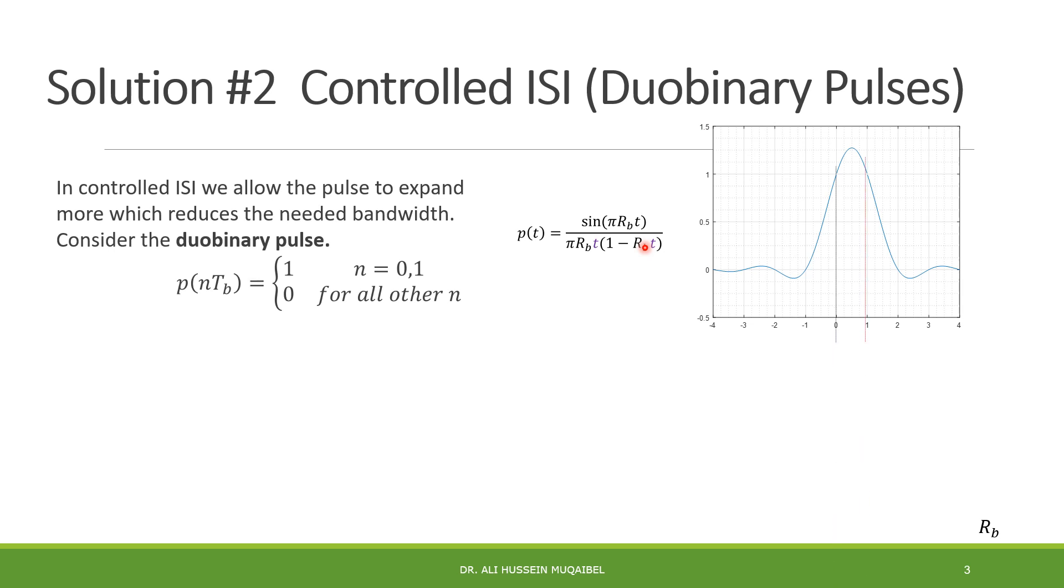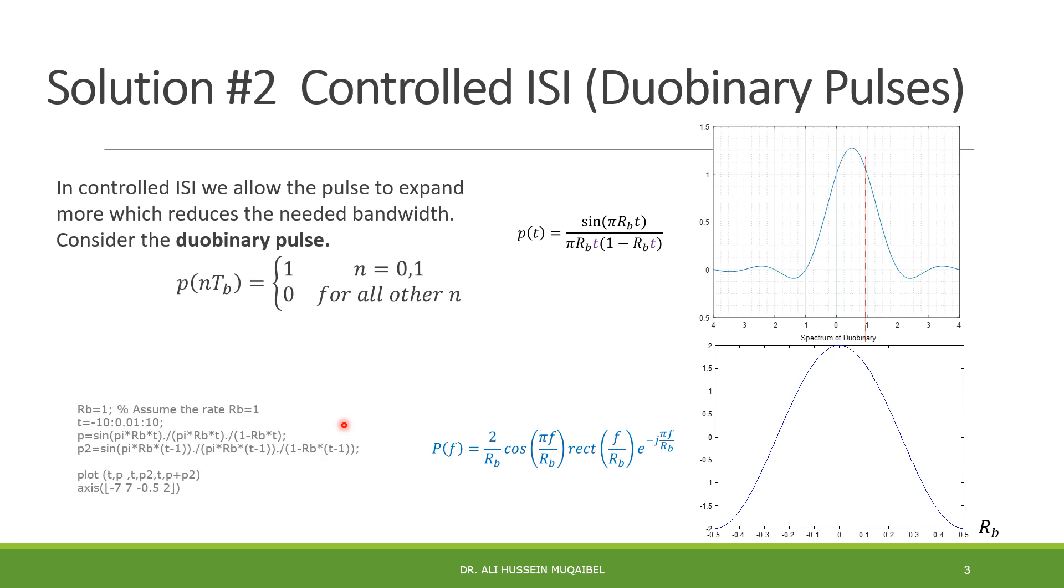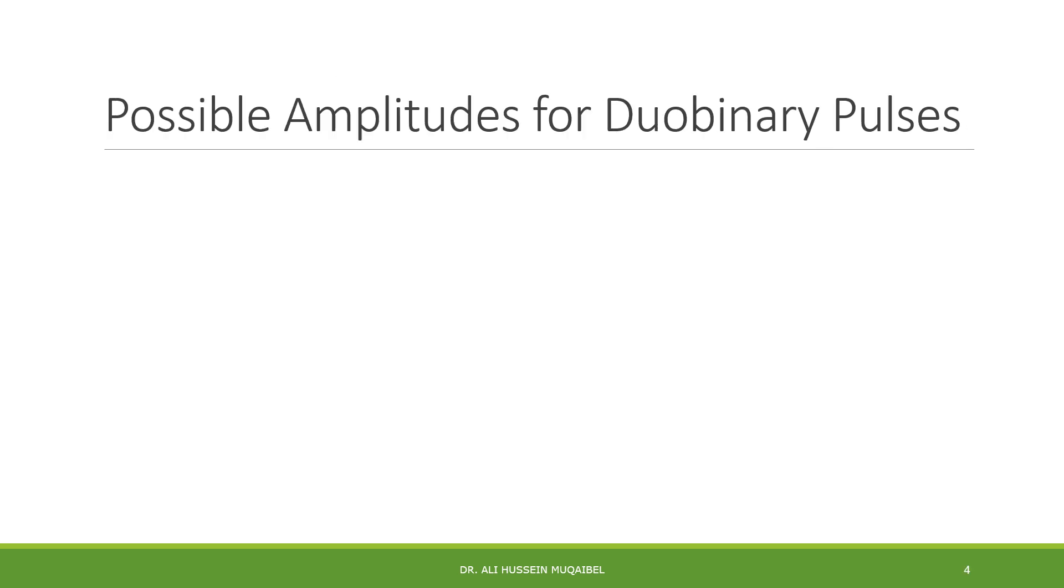In frequency domain, if you do the Fourier transform, you'll find the expression for the Fourier transform is this. And the bandwidth here equals to the normalized bandwidth in terms of Rb, it's 0.5 times Rb. So the bandwidth of this pulse is as good as sinc. It does not require more bandwidth, because the maximum frequency is Rb over 2, or 0.5 times Rb. So we're not increasing the bandwidth, but now we have to prove that this is going to give us zero ISI.